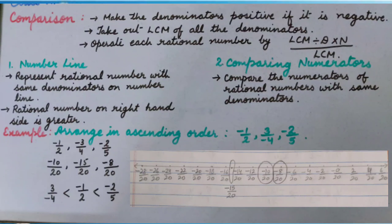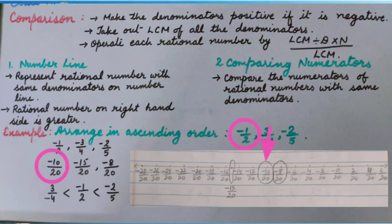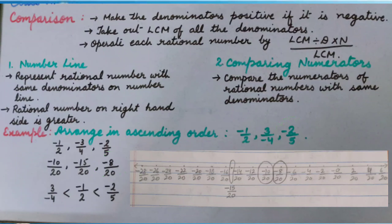Here, we have to arrange the rational numbers in ascending order. So we will start with the leftmost point. Minus 15 upon 20 is the smallest, which represents 3 upon minus 4. Then minus 10 upon 20, that is minus 1 upon 2. Then minus 8 upon 20, that is minus 2 upon 5. Thanks for watching.